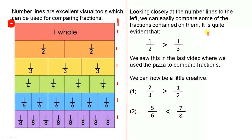Looking closely at the number lines to the left, we can easily compare some of the fractions contained on them. It is quite evident that a half is greater than a third. We saw this in the previous video when we were talking about the pizza. A half goes from there to there, but a third only goes from there to there. So you can see that a half is greater than a third.